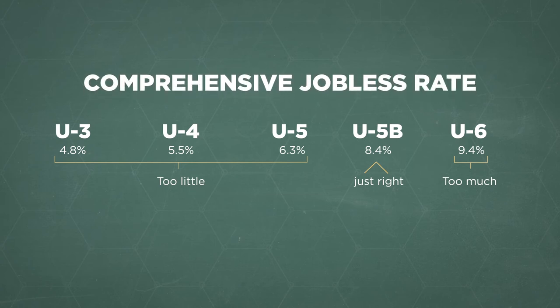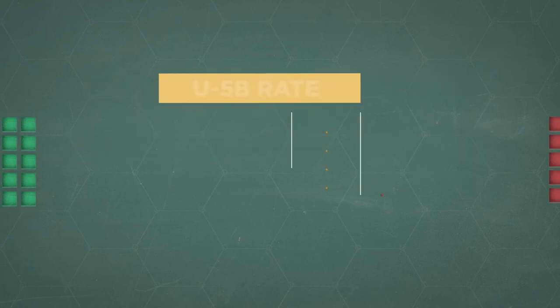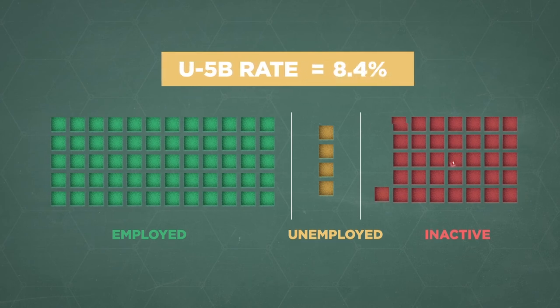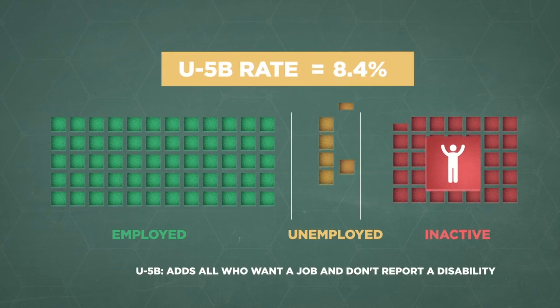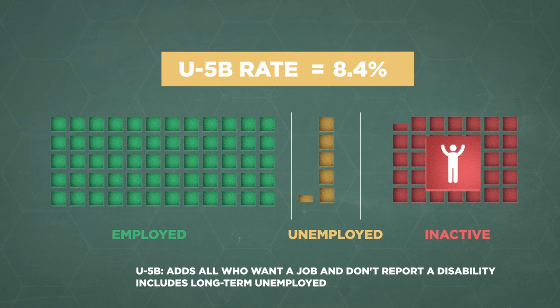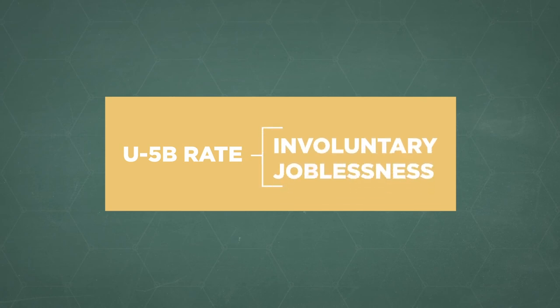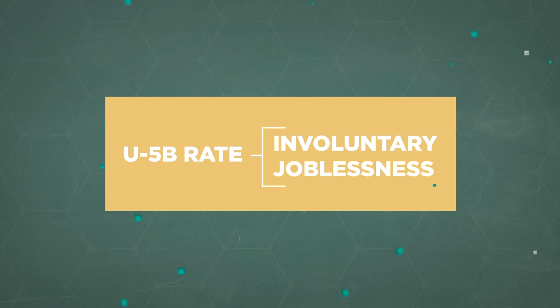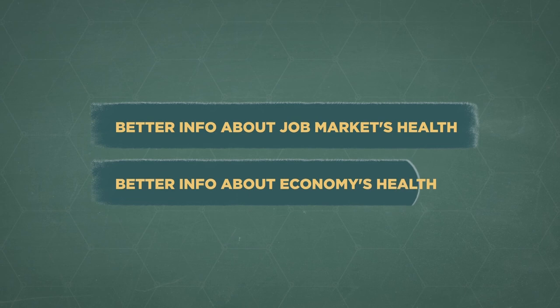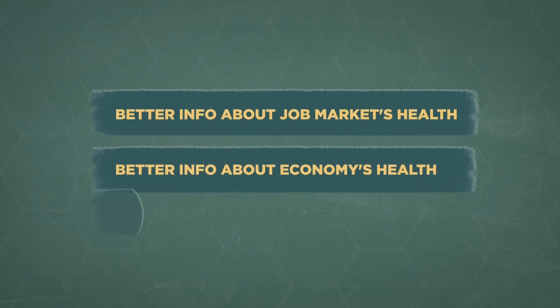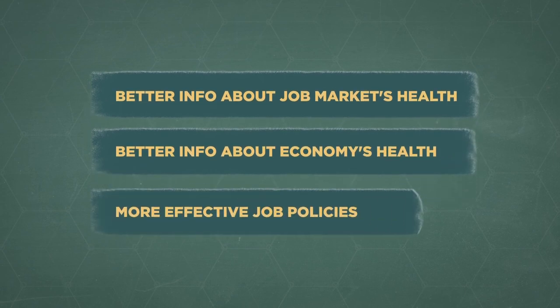Call it the Comprehensive Jobless Rate, or U5B in econ-speak. This unemployment rate is very simple: it counts every person who says they want a job and is able to work. Importantly, it also counts the people who gave up looking for work a long time ago, which the other measures ignore. In other words, the U5B fully captures involuntary joblessness for the first time. The difference in rate may seem small, but it reflects millions of people. With this rate, not only would we have a better sense of the health of the job market and our economy, but we could also craft more effective job policies.